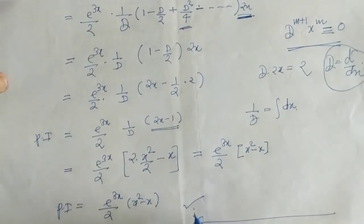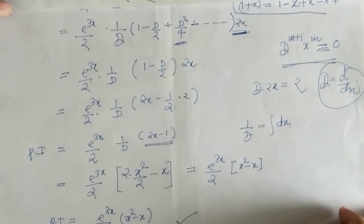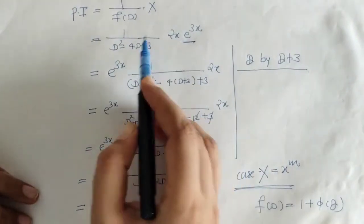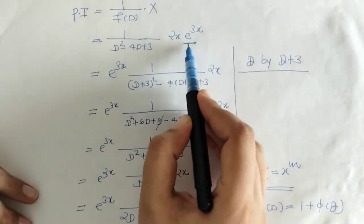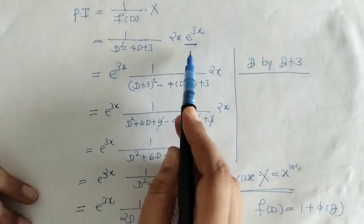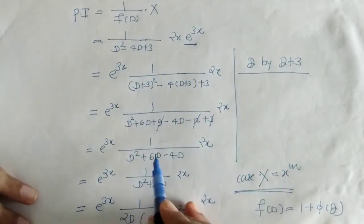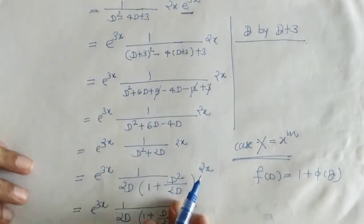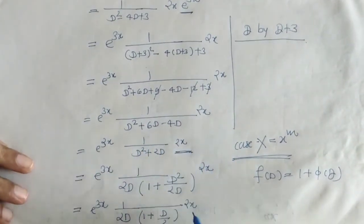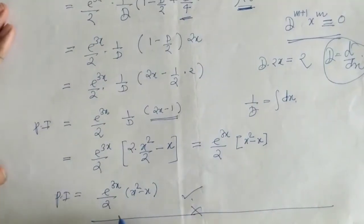So this is the required PI. First we took e raised to 3x outside this operation, and at the same time we replaced D by D plus a. That gave us a new f of D, and we operated this f of D on x raised to m by our earlier case, and so we got the required PI.